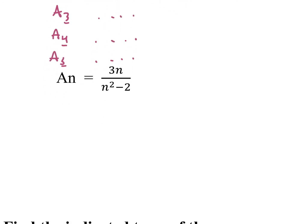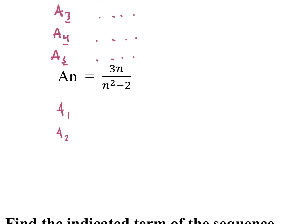For the next one, we do the same thing — plug in 1 through 5. For this one, I'll plug in 4 and we can do that together. So we have 3 times 4 over 4 squared minus 2. When doing these, be careful with your order of operations. So we have 12 over 14, and then we can simplify the fraction to 6 over 7.